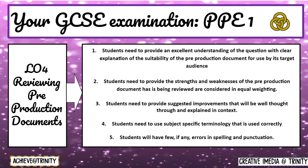The final section of the exam paper, learning objective 4, concentrates on the reviewing of pre-production documents. In order for students to achieve high marks on this question, they need to ensure that they are referencing back to the question, making it appropriate to the scenario and the target audience. They need to give a balanced view of both the strengths and weaknesses of the pre-production document, whilst also suggesting improvements and giving information as to why they have suggested those improvements. Students also need to ensure that they are using subject-specific terminology within their answer, and that there are few, if any, spelling and punctuation errors.